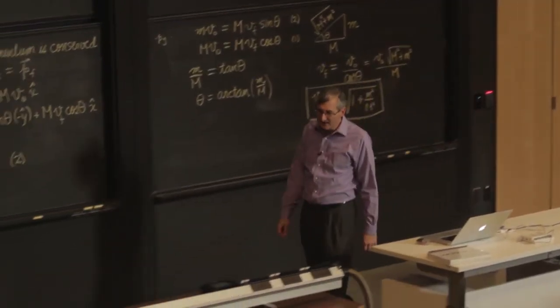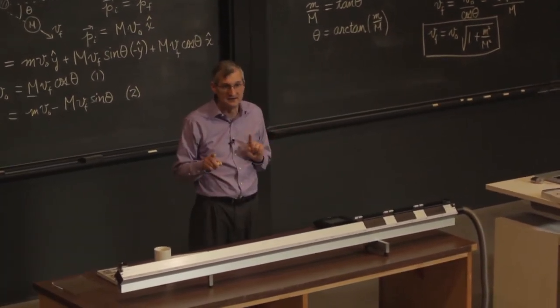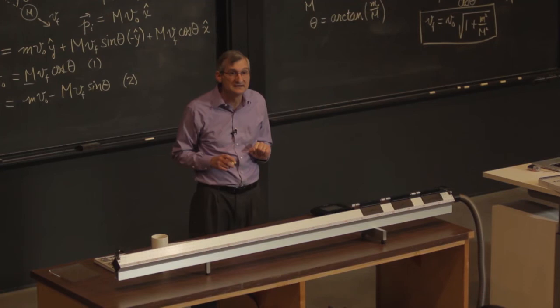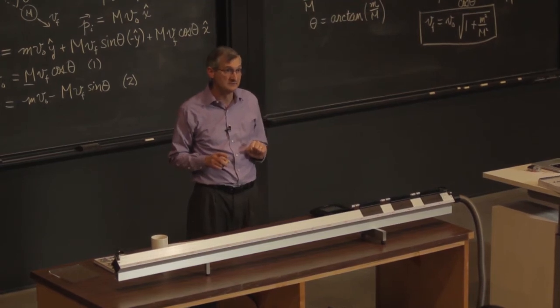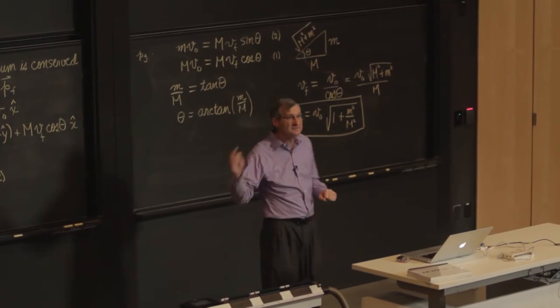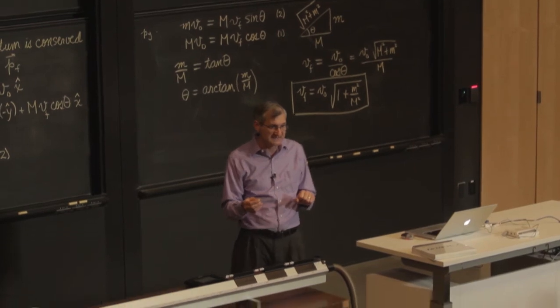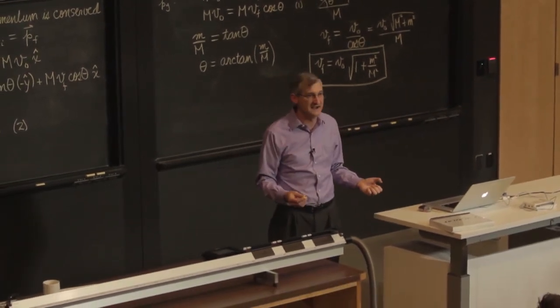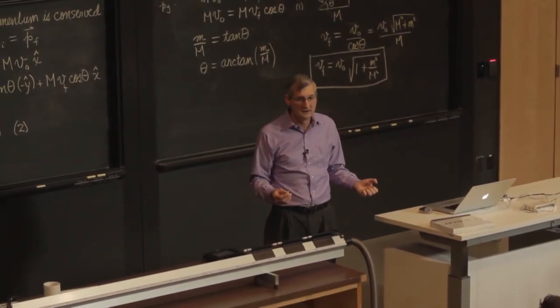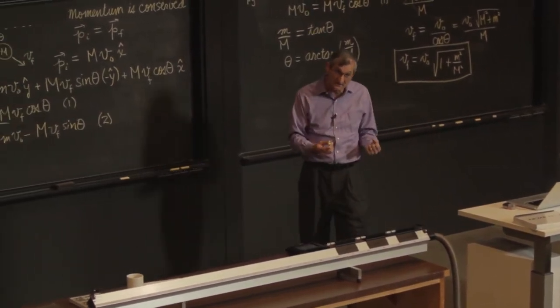So in a collision, there are lots of different directions that the things could come out in and still be consistent with conserving momentum. Okay, usually it's not enough to say I'm throwing this thing at that other thing. I know their masses, I know the initial velocity, to solve for the final velocities. Okay, there are lots of different angles that they could come out at and conserve momentum.